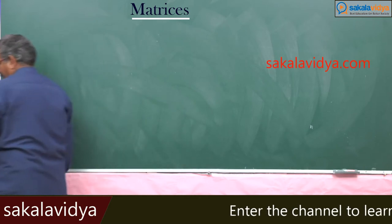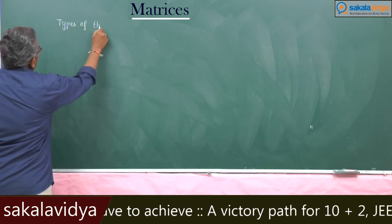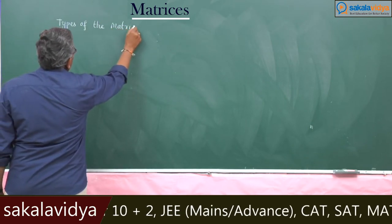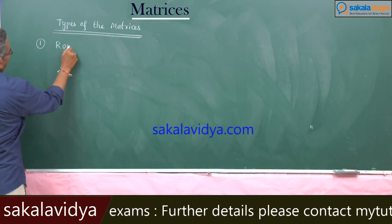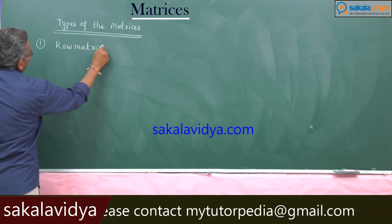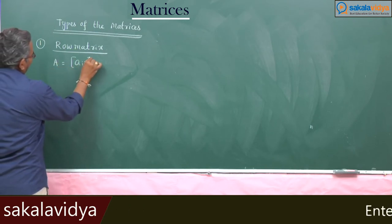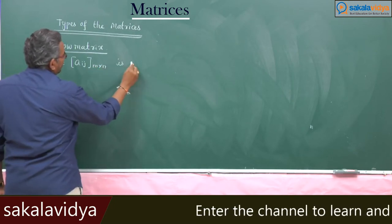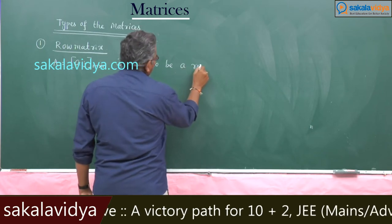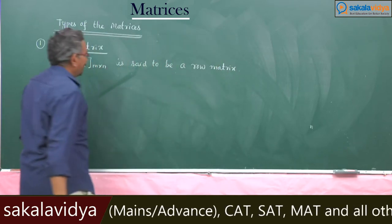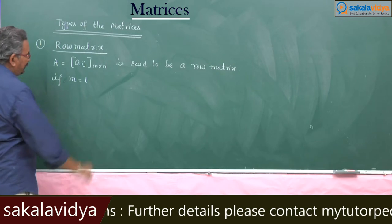Types of the matrices. The first one is row matrix. A matrix A = [Aij] of order m by n is said to be a row matrix if m is equal to 1.